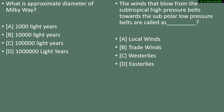Question 13: what is the approximate diameter of the Milky Way? Options are 1,000 light years, 10,000 light years, 1 lakh light years, or 10 lakh light years. The correct answer is option C — 1 lakh light years.